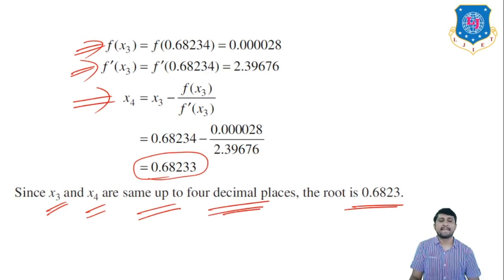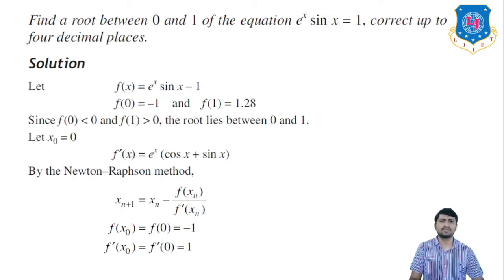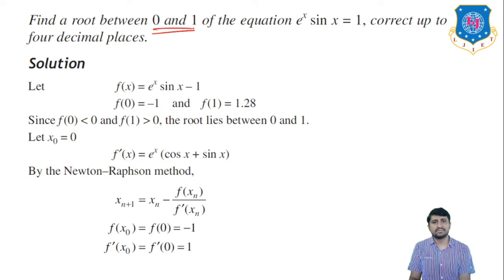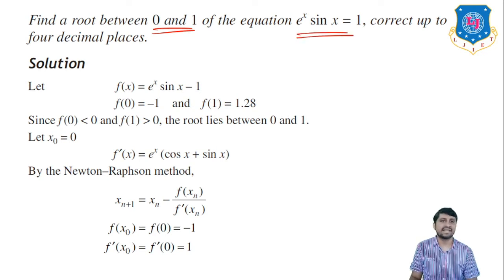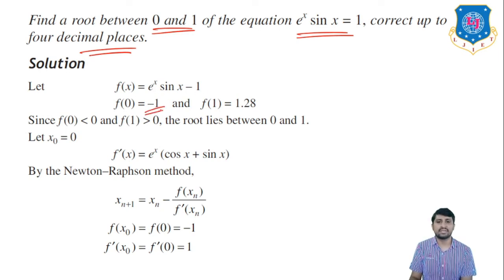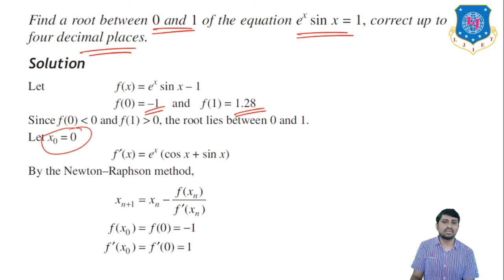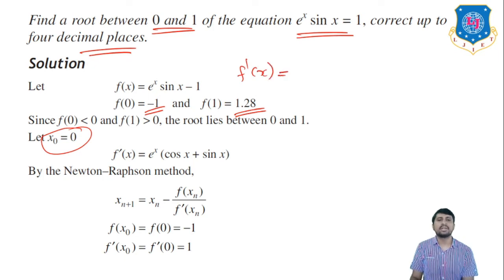Let's take one more example using Newton-Raphson. Find the root of eˣ · sin x = 1, correct to four decimal places, where the root lies between 0 and 1. So f(x) = eˣ · sin x − 1. f(0) = −1, f(1) = 1.28, so x0 can be 0 or 1. f′(x): differentiating eˣ · sin x using the product rule gives eˣ · sin x + eˣ · cos x = eˣ(sin x + cos x).